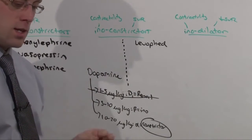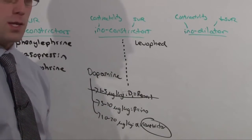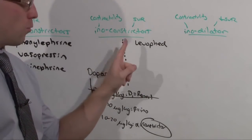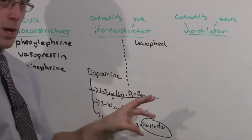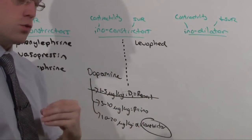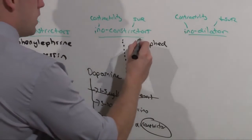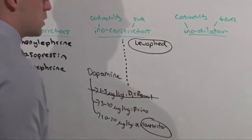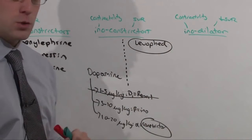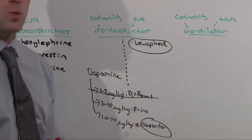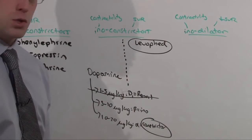Because someone did a study that said dopamine causes more tachyarrhythmias than levophed. So, from right now, if you have to pick a vasopressor, and you don't know what's going on, the safest one to pick is levophed. Because it's somewhat inotropic, it's somewhat vasoconstrictor, and so far in any of the trials, it's been shown to be the safest.